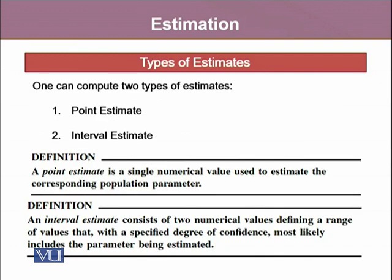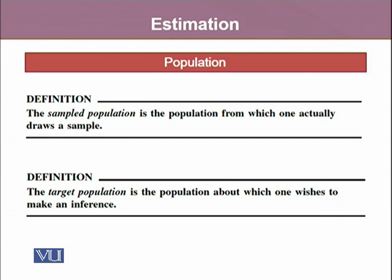Estimates are of two types: point estimates and interval estimates. A point estimate is a single numeric value used to estimate the corresponding population parameter. An interval estimate consists of two numeric values defining a range of values with a specified degree of confidence that most likely includes the parameter being estimated.